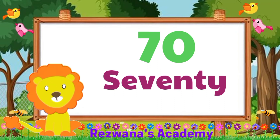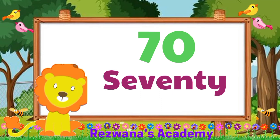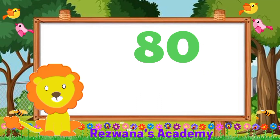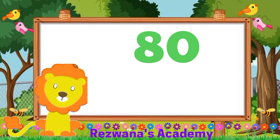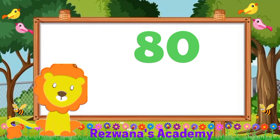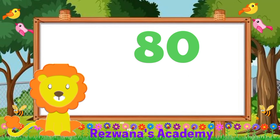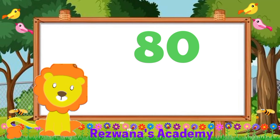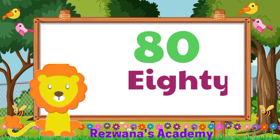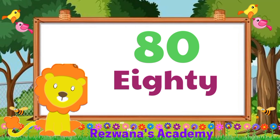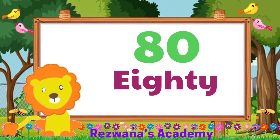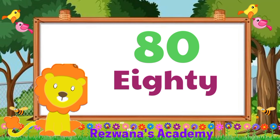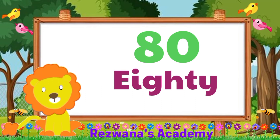Can you guess which T number is going to come next? Well done. That would be 80. It is made of 6 letters. So let's spell them together: E, I, G, H, T, Y. 80.